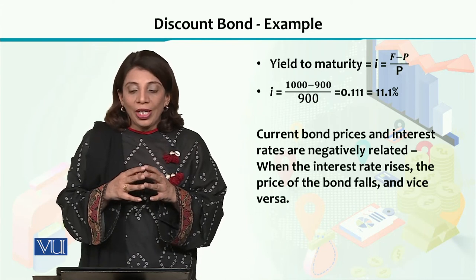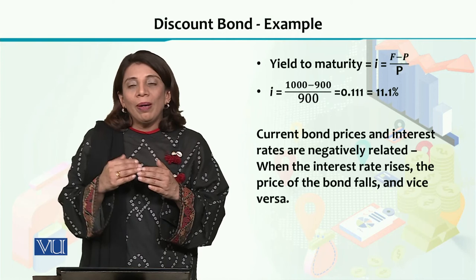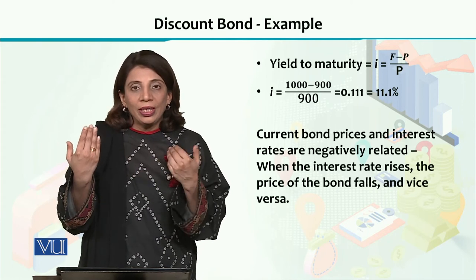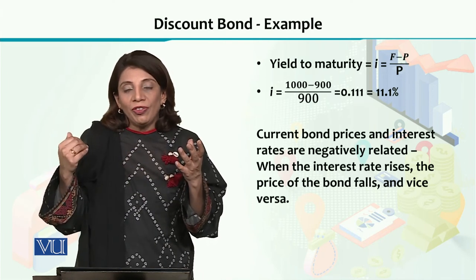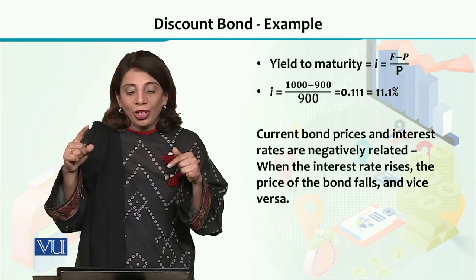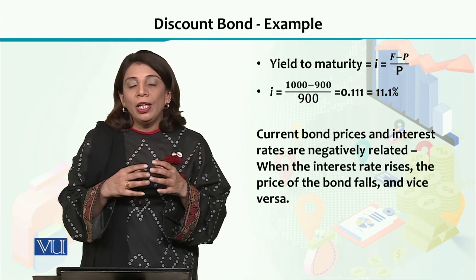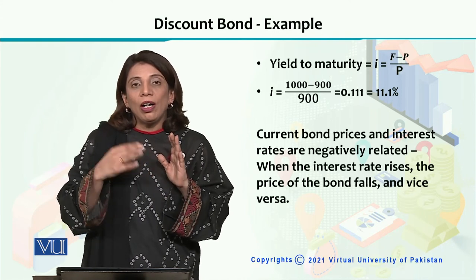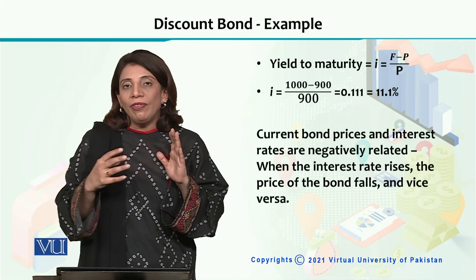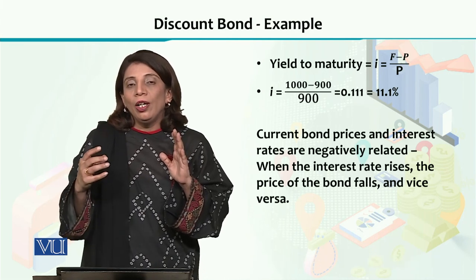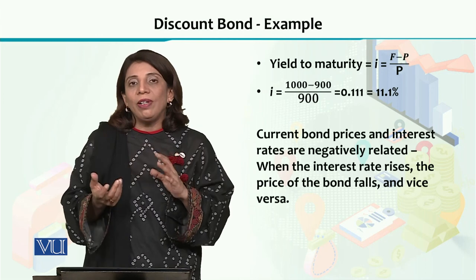Another important thing which we need to understand is कि जो current bond price होती है और interest rate है, यह दोनों चीजें आपस में negatively related होती हैं। अगर आपका interest rate high होगा तो आपका current bond price कम होगा, and vice versa — अगर current bond price high है तो interest rates low हैं। यह opposite direction में चलते हैं। इसलिए जब financial decision making करनी है — instrument में invest करना है या नहीं, उसको बेच देना है — इसका बहुत ज्यादा लेना देना interest rates के उतार-चढ़ाव से होता है। We look at the values of interest rates and then decide, as these financial instruments are negatively related with each other.